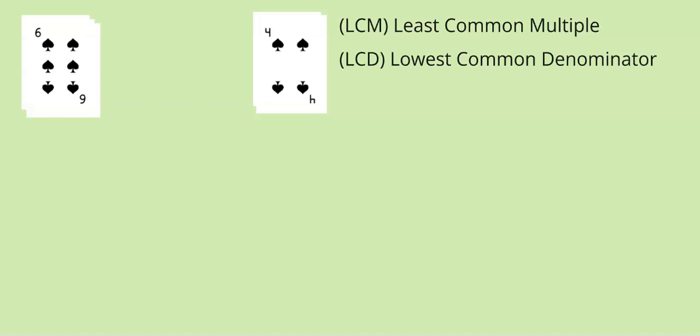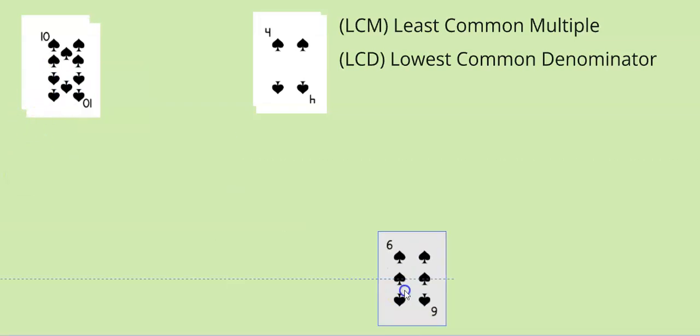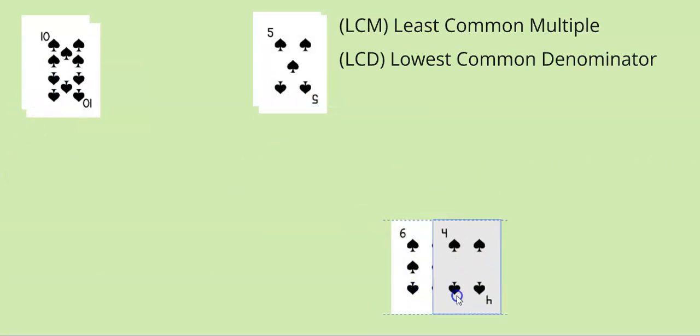So to start, let's say the two students had the six and the four show, and they have to determine what is the least common multiple of six and four. In this case, the least common multiple would be 12. So whoever says 12 first would get those two cards. Now if a student said 24, because they multiplied the two numbers together, that is a common multiple, but it's not the least common multiple.